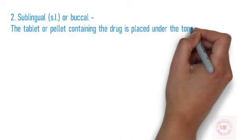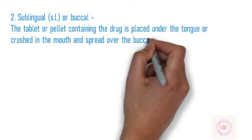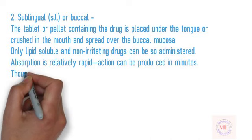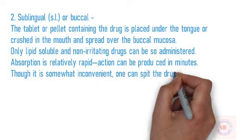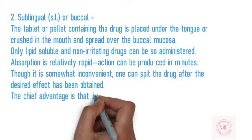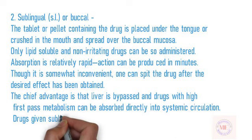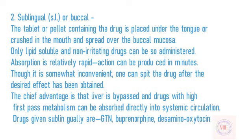Sublingual (SL) or buccal: The tablet or pellet containing the drug is placed under the tongue or crushed in the mouth and spread over the buccal mucosa. Only lipid-soluble and non-irritating drugs can be so administered. Absorption is relatively rapid; action can begin within minutes. Though it is somewhat inconvenient, one can spit out the drug after the desired effect has been obtained. The chief advantage is that the liver is bypassed and drugs with high first-pass metabolism can be absorbed directly into systemic circulation. Drugs given sublingually include GTN, buprenorphine, and desmino-oxytocin.